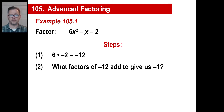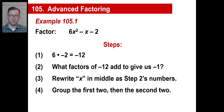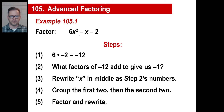What two factors of negative 12 add to give you negative 1? Negative 4 and positive 3, right? Keep that in mind. Step 3: rewrite the middle x-term using those two numbers from step 2. Step 4: group the first two terms and then the second two terms, because you're going to have four terms at this point — you won't write negative 1x, you'll write two separate terms. Last step: factor and rewrite, and you're done.